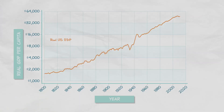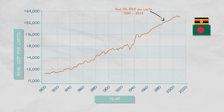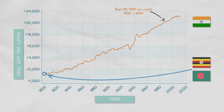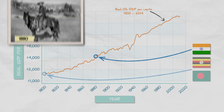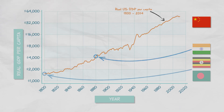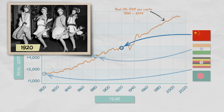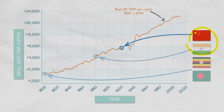We can also use this graph to do something neat — look at other countries today and place them in US history. For example, Bangladesh and Uganda both have a real GDP per capita today about the same as the United States had in 1800. India's real GDP per capita today is about the same as the US had in 1880. China is at about the GDP per capita of the United States during the Roaring Twenties. But remember, India and China are growing really rapidly, so they're catching up.